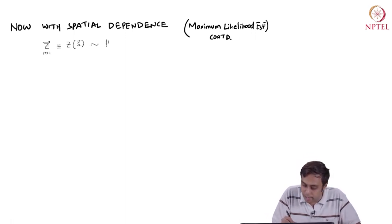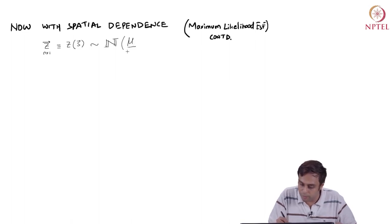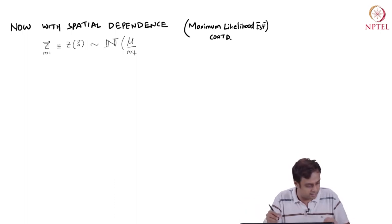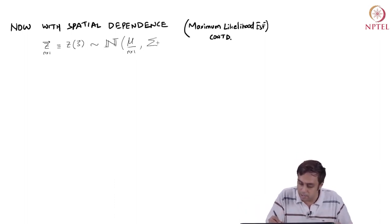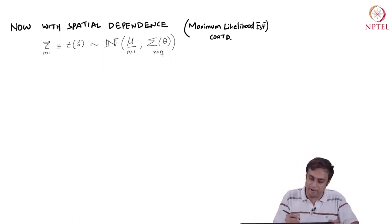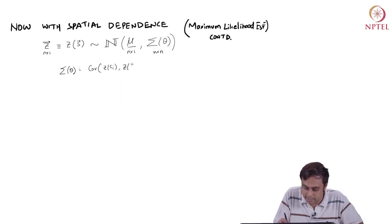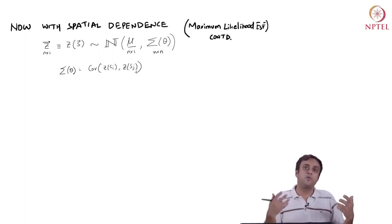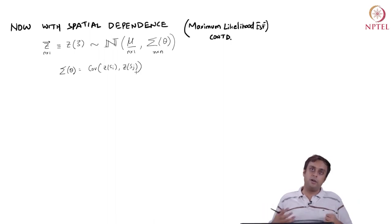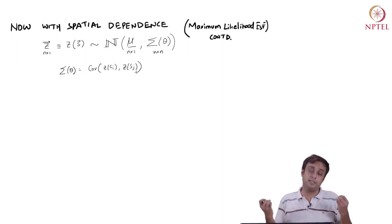This is going to be distributed as a multivariate normal with mean mu. We have the same mean as the spatially independent case, but the variance-covariance matrix is now given as sigma with functional dependence on theta. Sigma theta provides me a measure of covariance of values at location Z(Sᵢ) and location Sⱼ, providing a general covariance structure driven by their locational differences Sᵢ and Sⱼ.